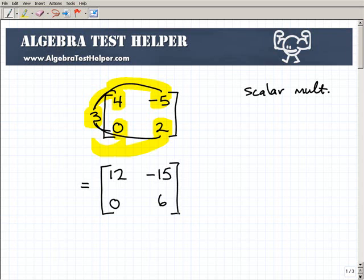So that's it. So scalar multiplication, extremely easy. Now, this is a real basic example because it's only one number times a 2 by 2 matrix. However, you might have a number times something much larger.